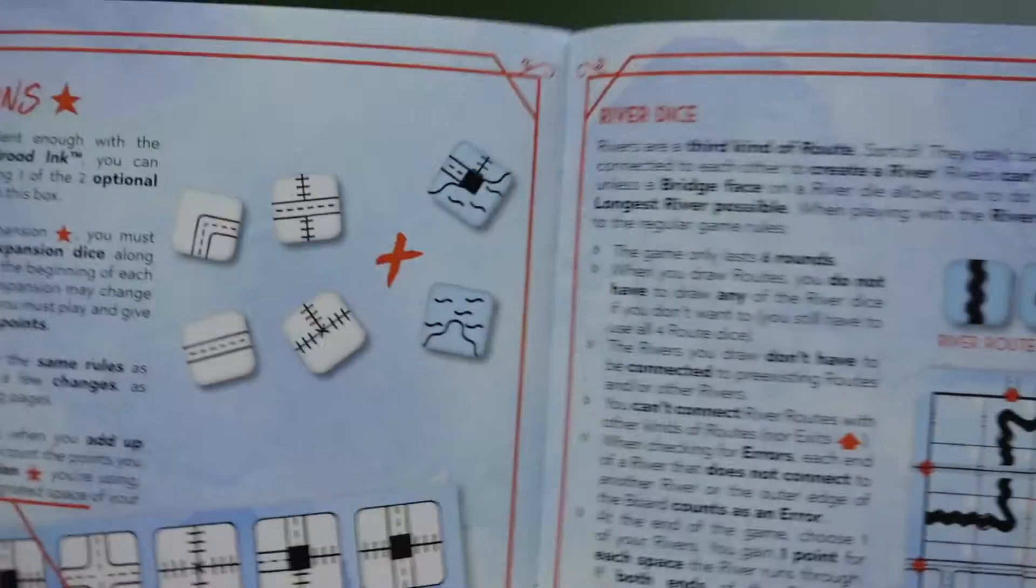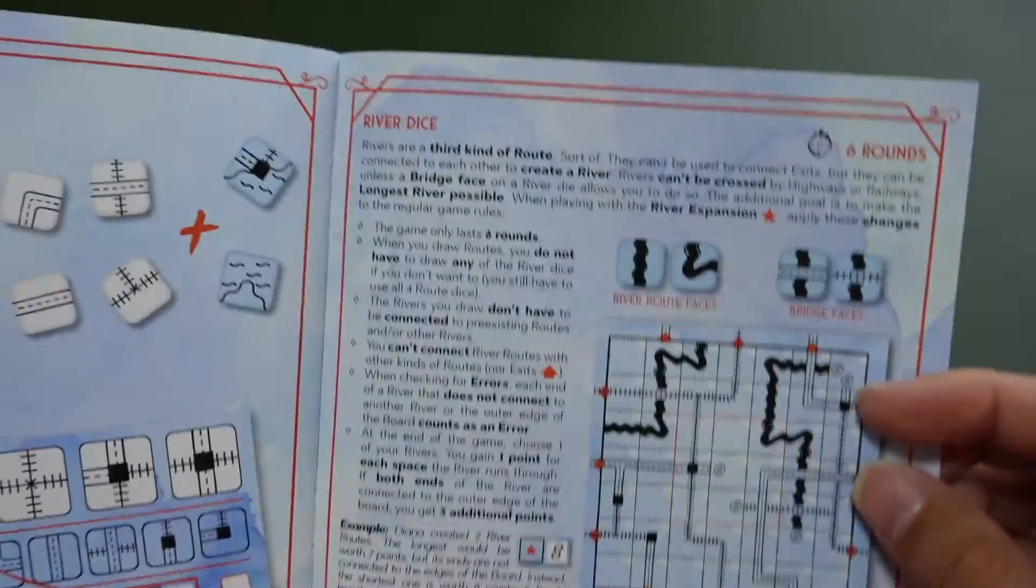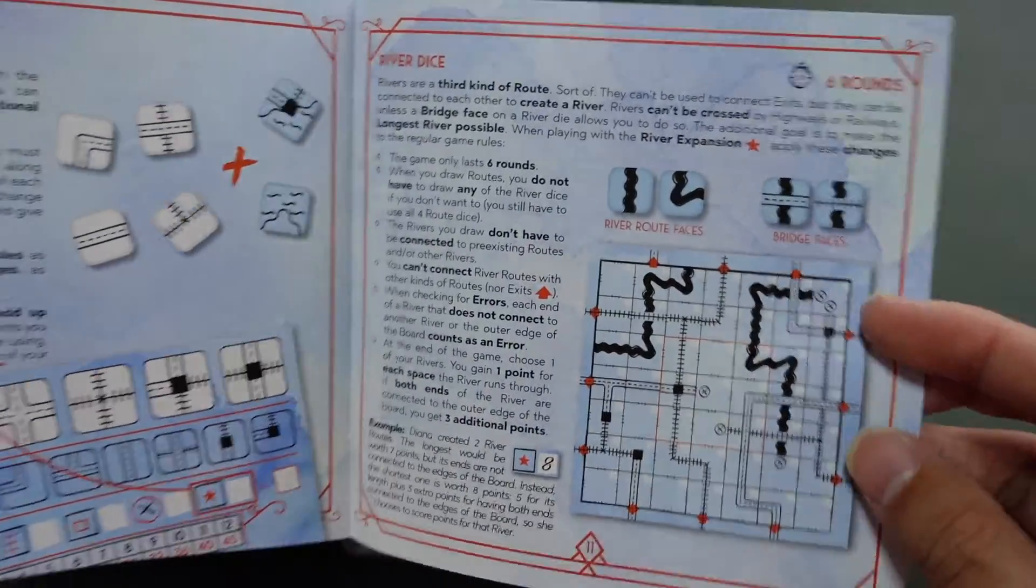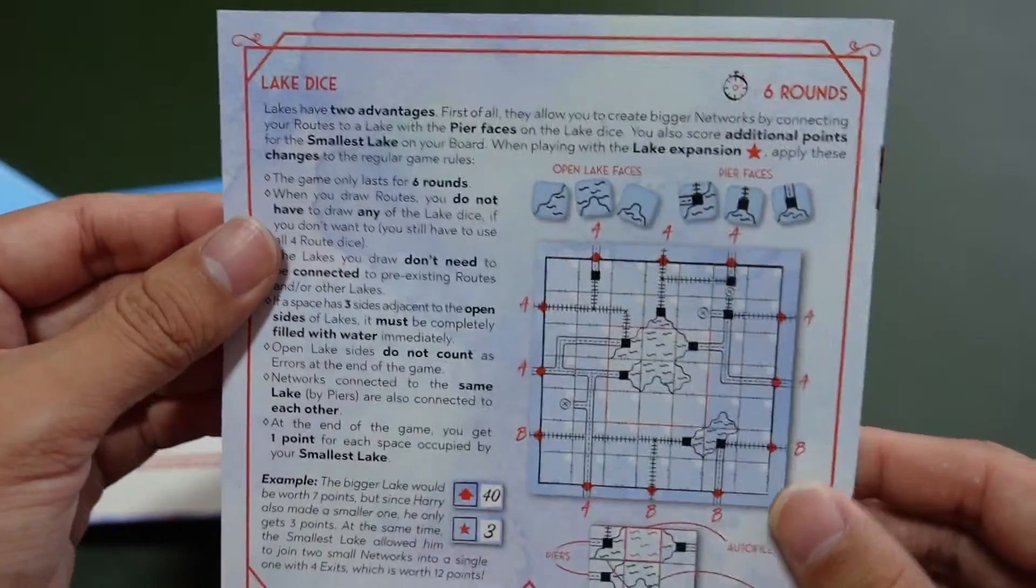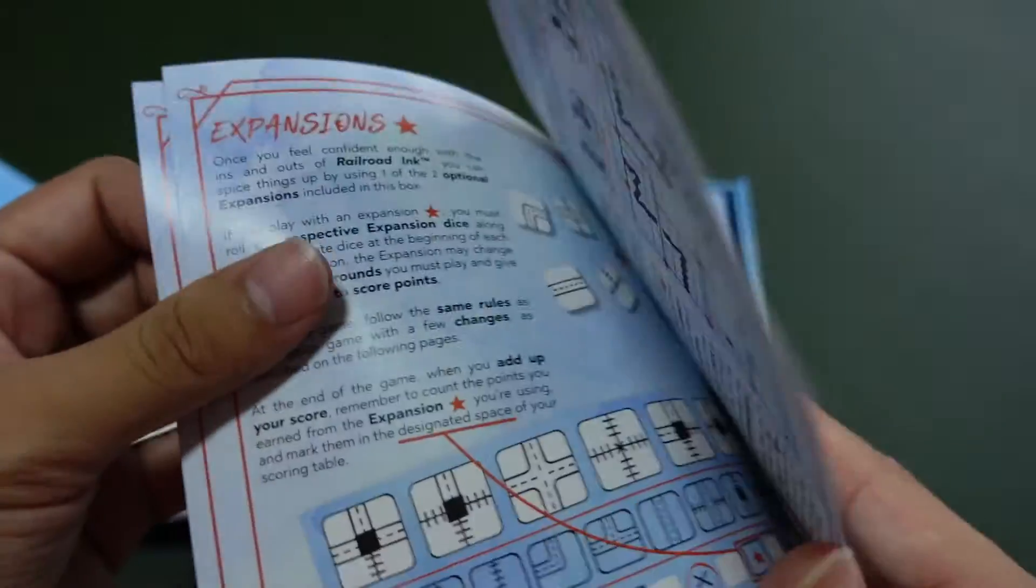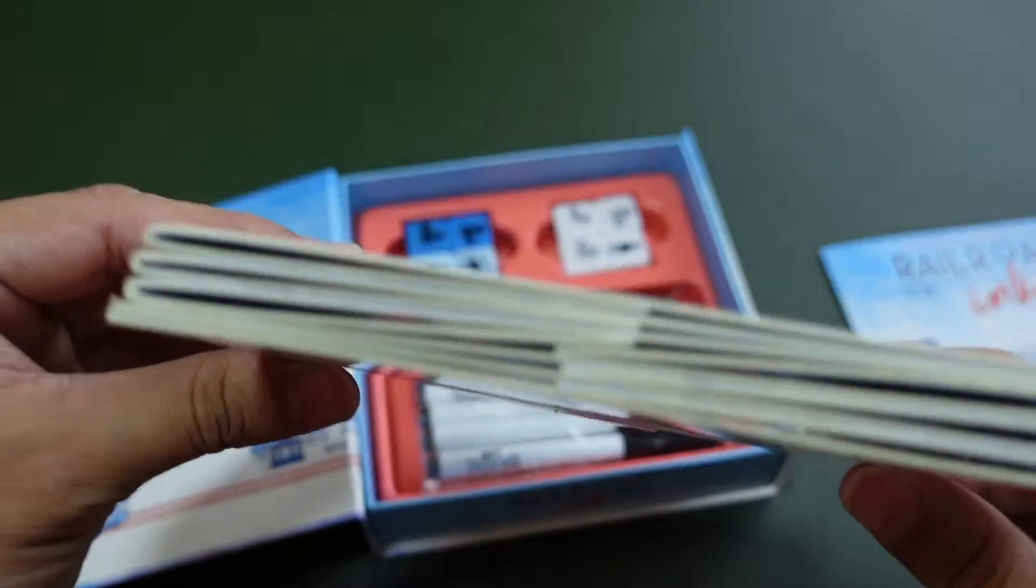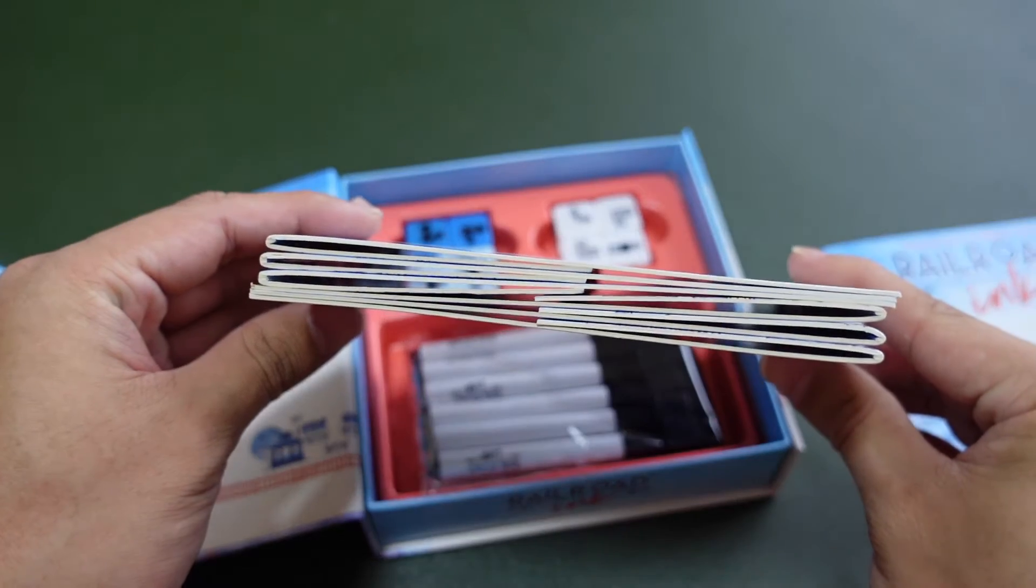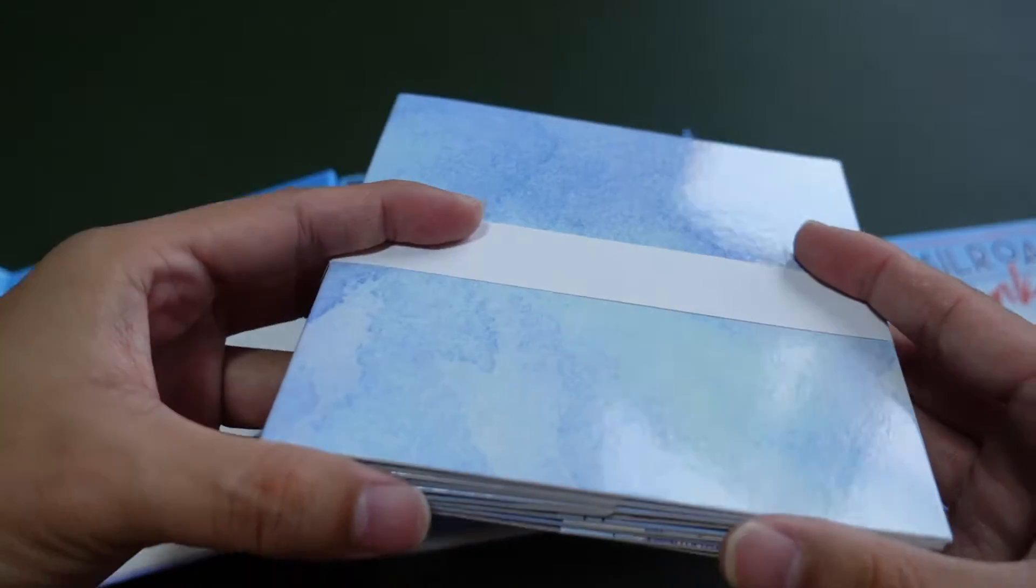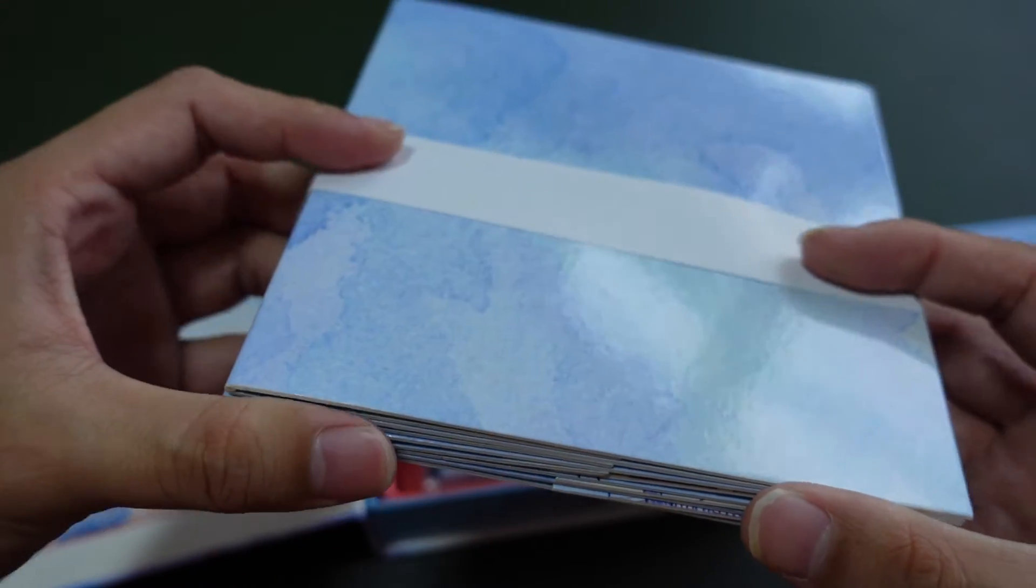There's also an expansions section. The blue dice are the expansion dice. There's an explanation for the river and lake dice.